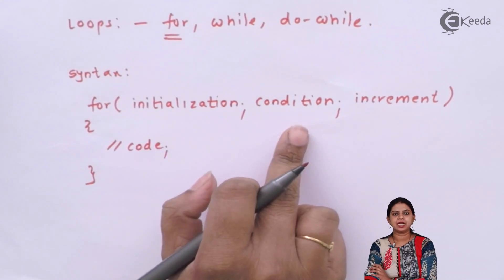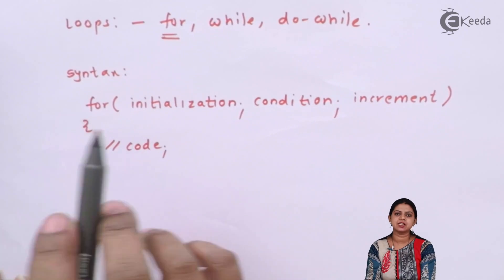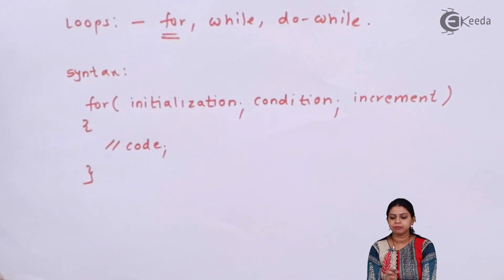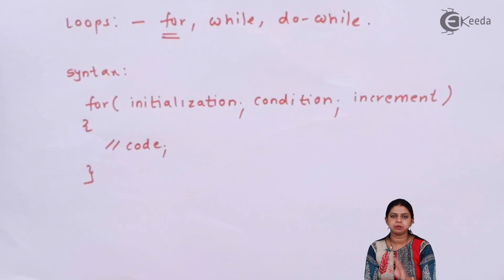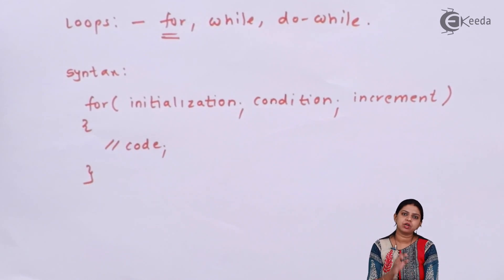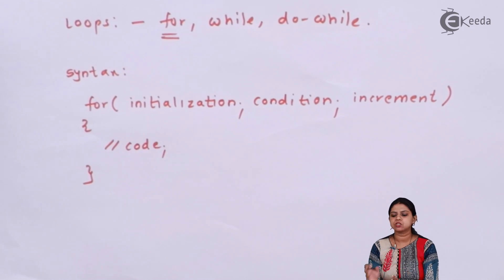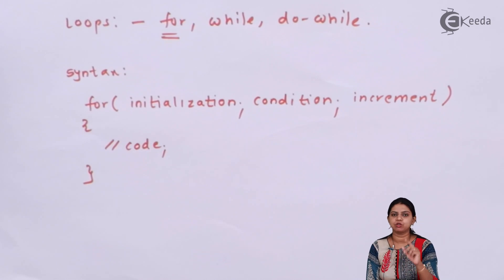Initialization is the initial value of your variable. Condition defines how many times you will be executing the loop — for example, if I'm printing my name a hundred times, my condition should be less than or equal to 100, meaning my counter variable should be less than or equal to 100. Increment means at every iteration we increase the value of the variable by one. We may also decrement.